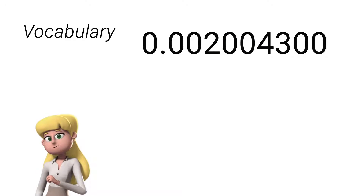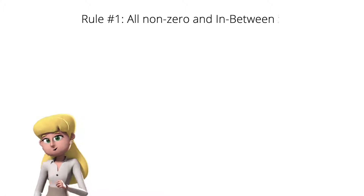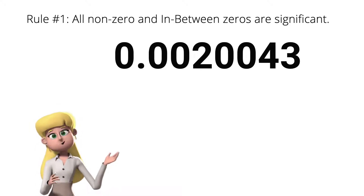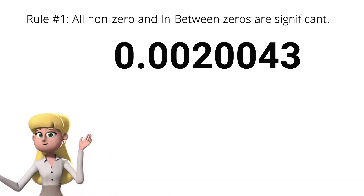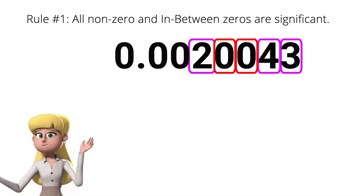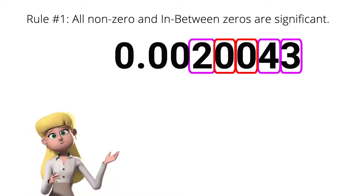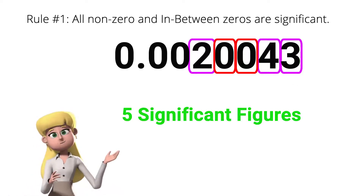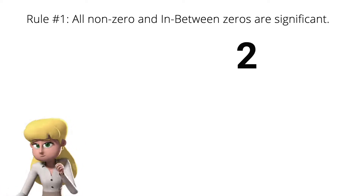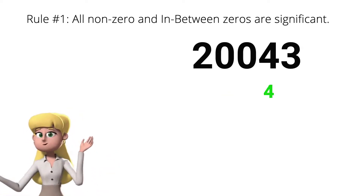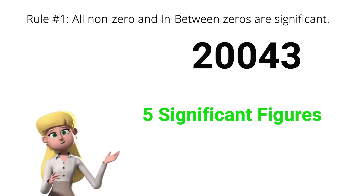Going back to the rules for significant figures. Rule number 1: all non-zero and in-between zeros are significant. If I have 0.0020043, the significant digits are all non-zero digits, so we count digits 2, 4, and 3, including in-between zeros — giving 5 significant figures. The same applies to 20,043, which also has 5 significant figures.